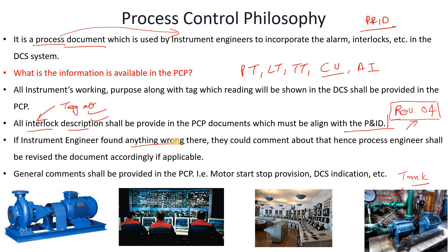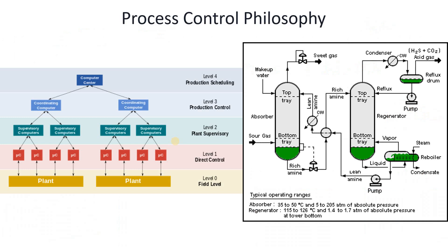Information like motor start/stop provision, DCS indication, and similar details should be provided in the process control philosophy. This helps the DCS operator as well as the instrumentation engineer when building the DCS.